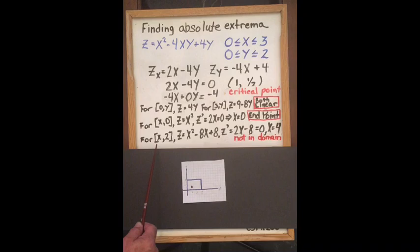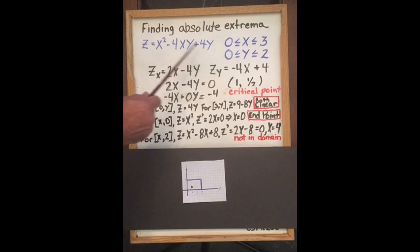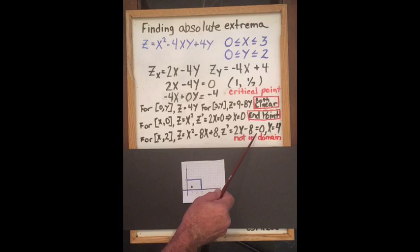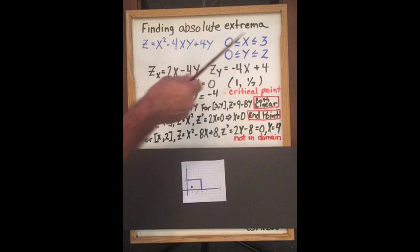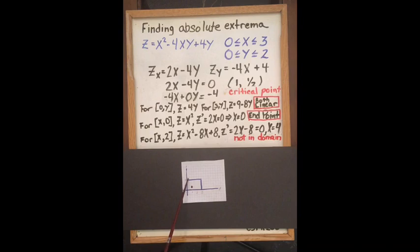When x is free and y is 2, we get the equation x squared minus 8x plus 8 by substituting 2 for y. The derivative is 2x minus 8; setting it equal to 0 means x equals 4, which is outside our domain. So all possible extreme values occur at the endpoints of the domain or at the interior critical point, and we need to check all of those values.